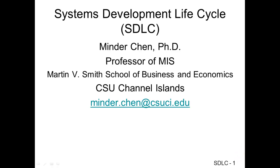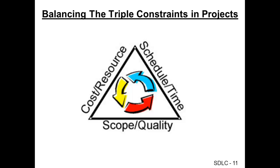This is Minjur Chen. This is the second video lecture on System Development Lifecycle. In this lecture we're going to focus on the challenge in terms of managing software projects. First of all, this is what we usually refer to as a triple constraint in project management in general, not just for software.